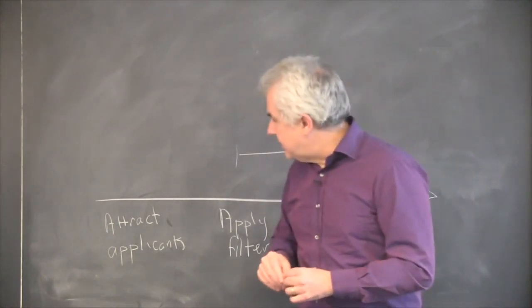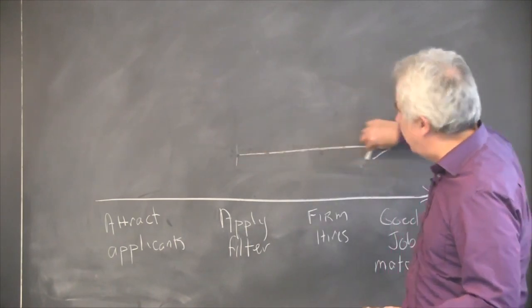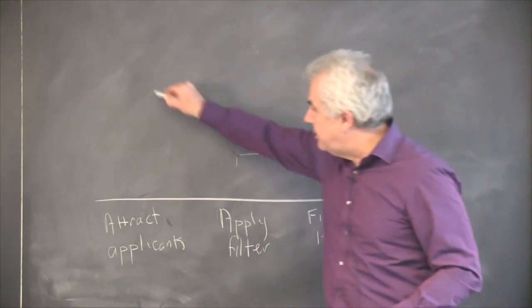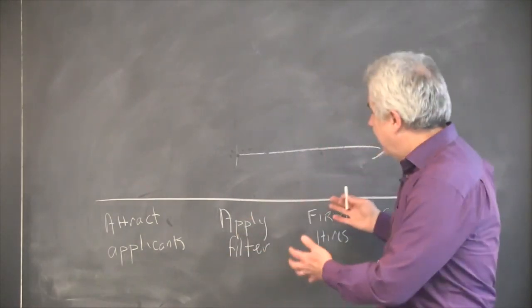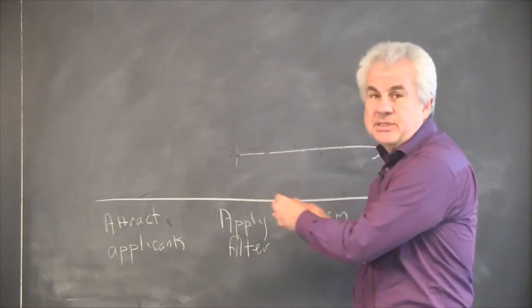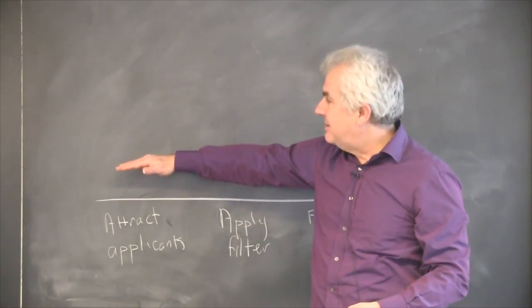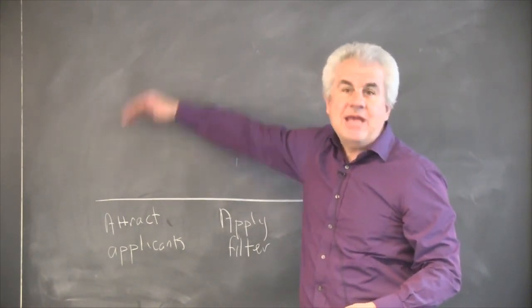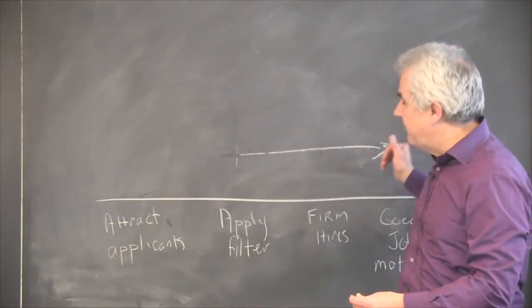Now, the problem was that her experiment and learning process was only designed to move from here to here, which meant if she did different things to attract applicants, the learning process in some sense would be contaminated because the way in which you attracted the applicants may well affect the assessed effectiveness of your filter.